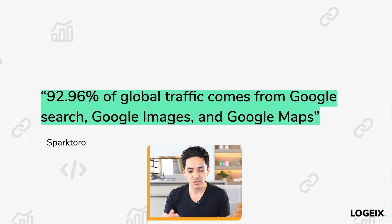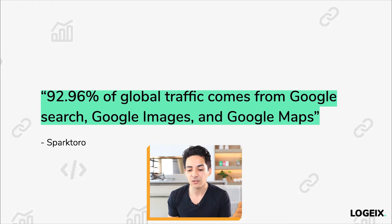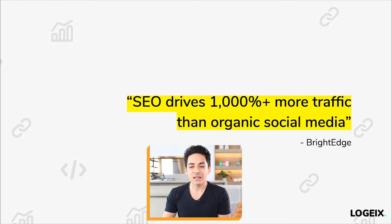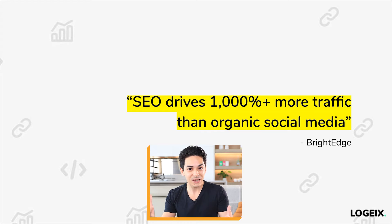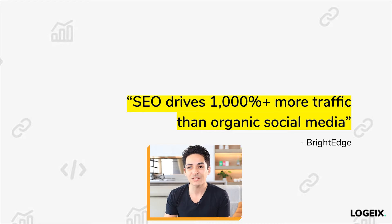Another study from SparkToro found that 92.96% — almost 93% — of global traffic comes from Google search, Google Images, and Google Maps. That is 93% of traffic that isn't from your Facebook, your YouTube, and your social media which everyone is hyped about. And one more from BrightEdge: SEO drives 1,000% more traffic than organic social media. SEO drives a thousand percent more traffic than organic social media — that is absolutely huge.